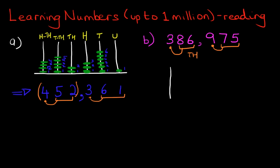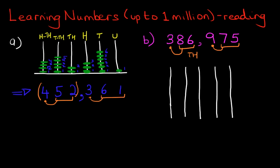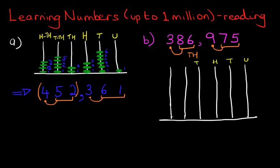We've got slightly larger numbers here. One, two, three, four, five and six columns. Let's draw the horizontal line which is the base. Let's label the abacus first: units, tens, hundreds, thousands, ten thousands, and hundred thousands.